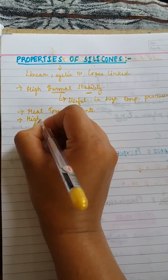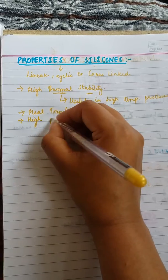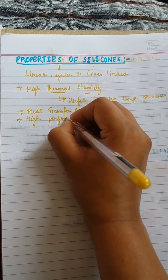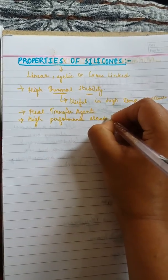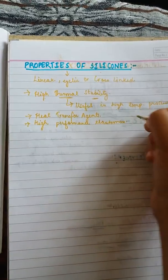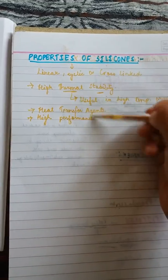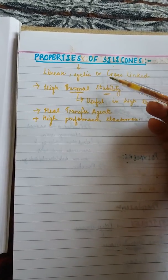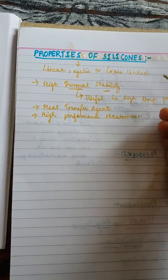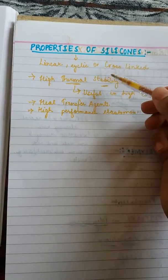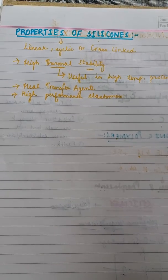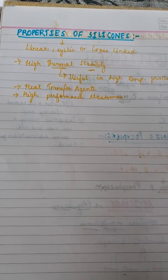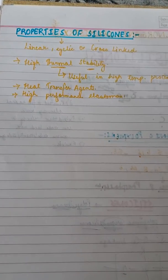As mentioned earlier, inorganic polymers are highly flexible, so silicones perform as high performance elastomers. The biggest property of inorganic polymers overall is that they are stable at high temperatures, which is why they are generally preferred over organic polymers made up of carbon atoms.